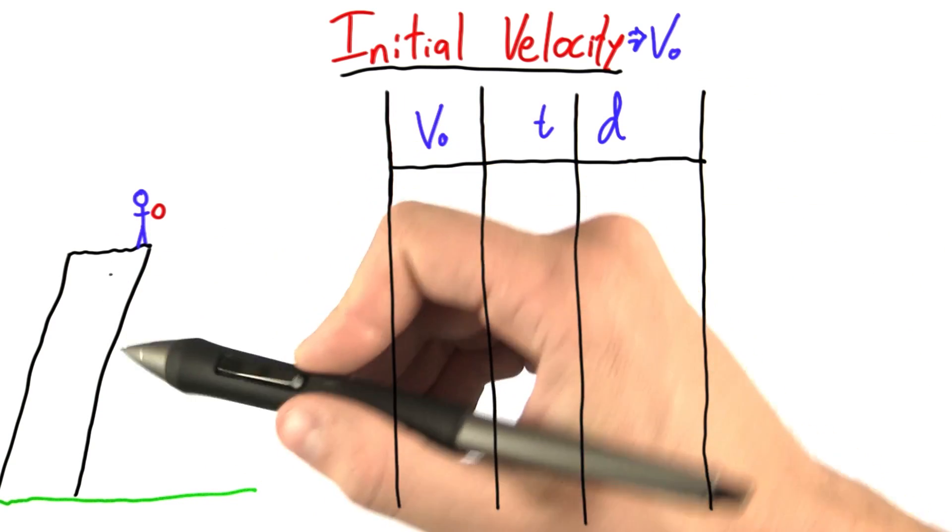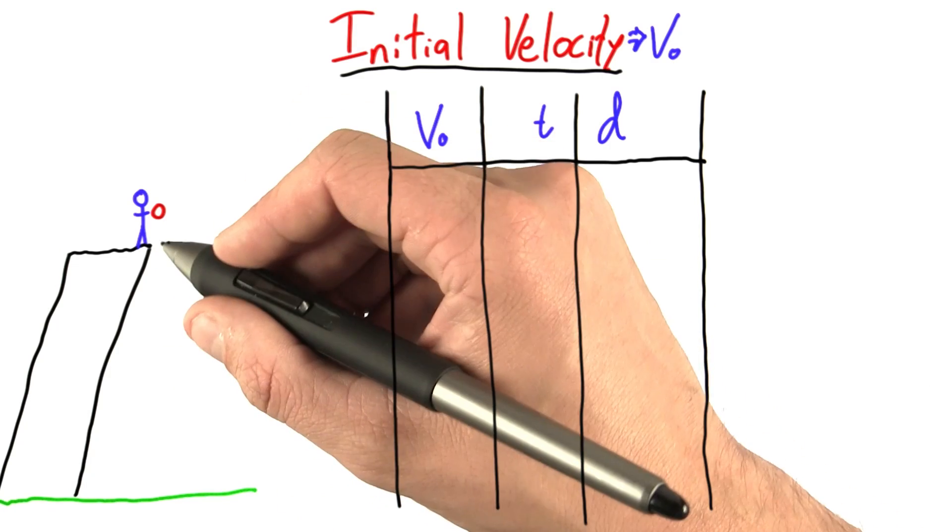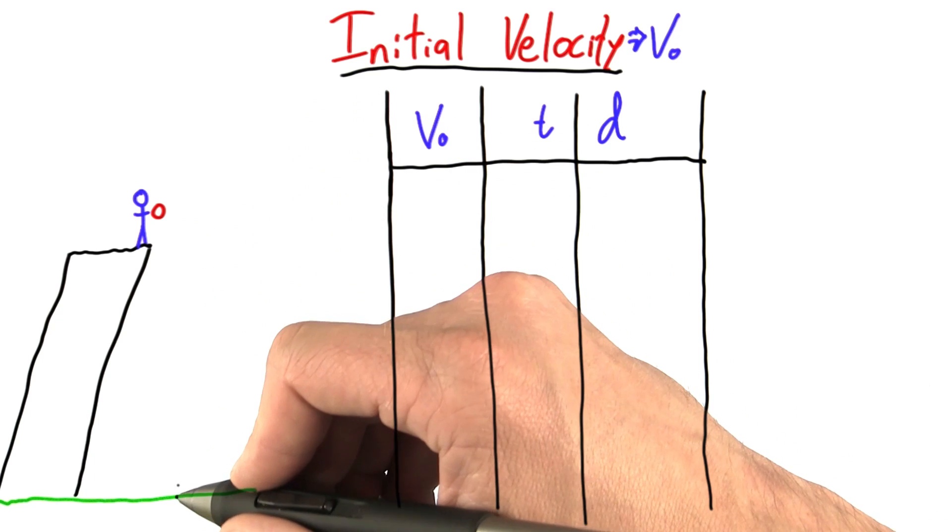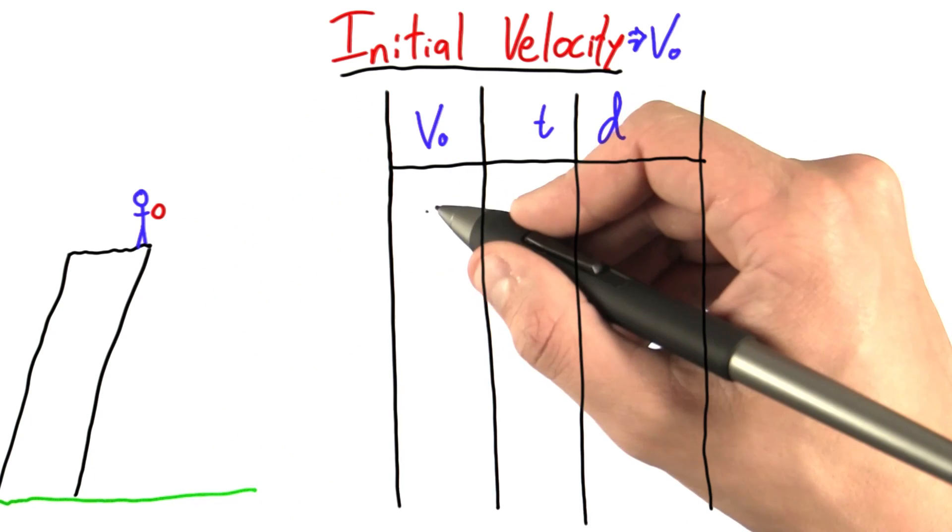So let's think back to Galileo standing on top of the Leaning Tower of Pisa. This time around, instead of just having him drop the ball, let's imagine he could throw the ball straight down with different initial velocities.